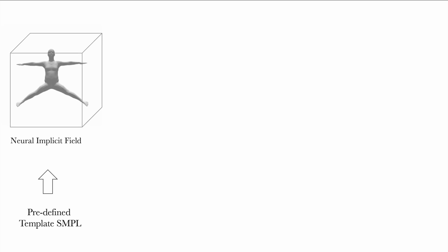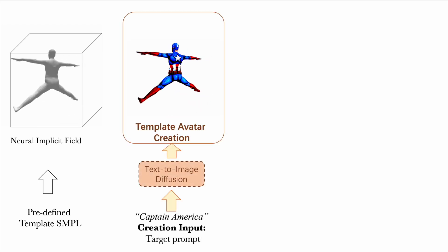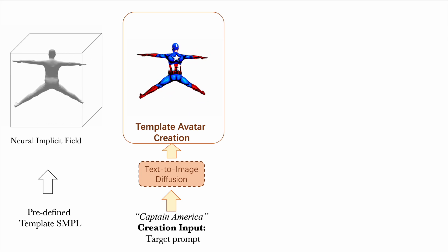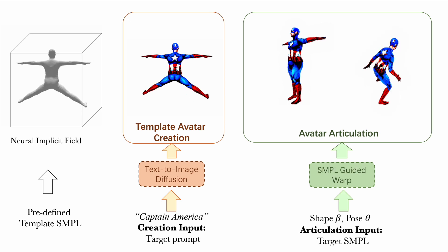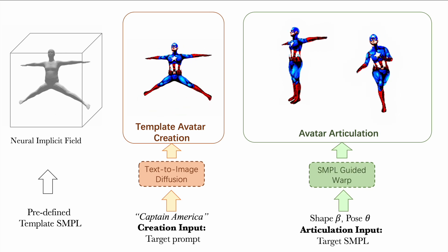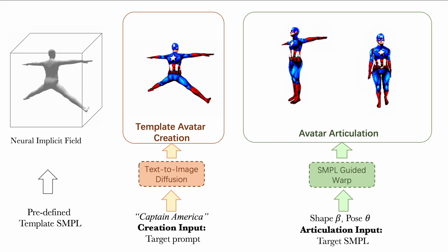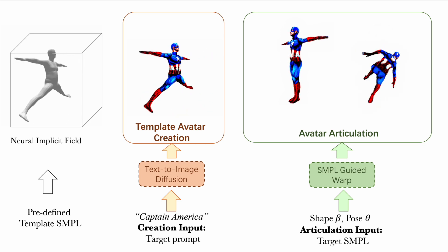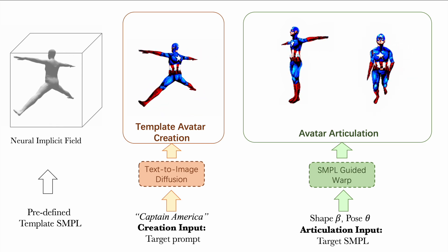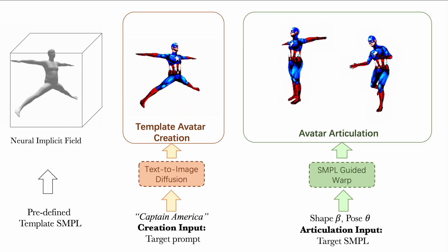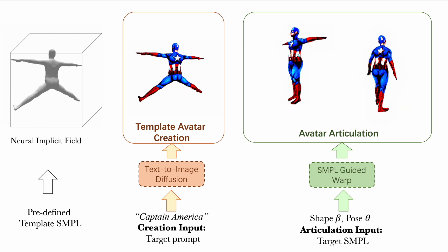The proposed method contains two stages. In the first stage, we first encode a bare SMPL mesh into neural implicit fields, and then use the text-conditional diffusion model to guide the desired avatar generation. This generated avatar will be used for reposing and animating in the second stage. To articulate the generated avatar, we use SMPL pose and shape parameters to provide explicit control. For example, we define a SMPL-guided warping function to query the template neural implicit field during the volume rendering.